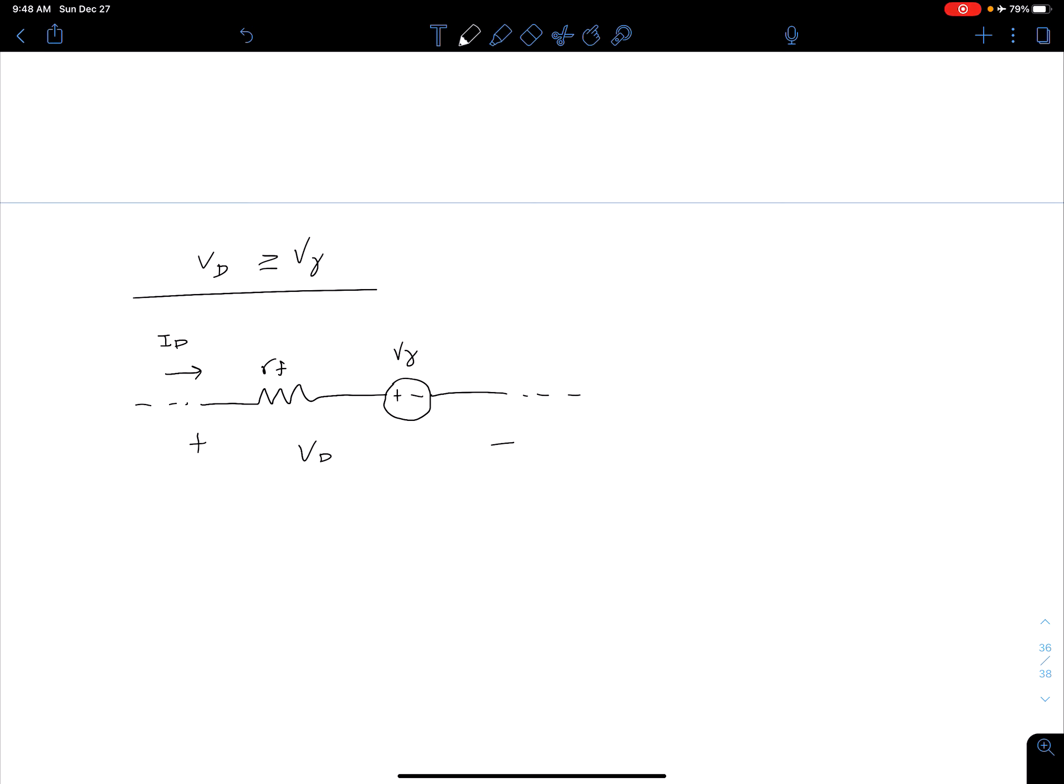So what we can do is, of course, if we have some external resistance, we could calculate our diode current ID. So we could say our ID would be our VD minus V gamma divided by RF plus our external resistance. And again, that's just if we had some external resistance hooked up here like that.